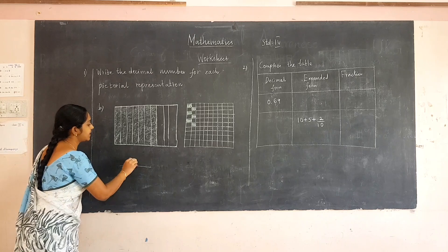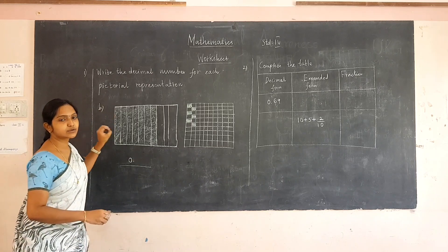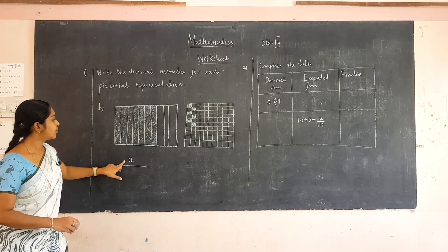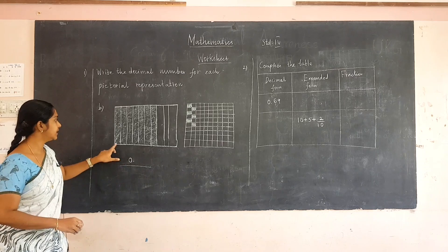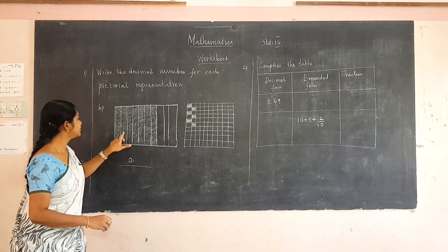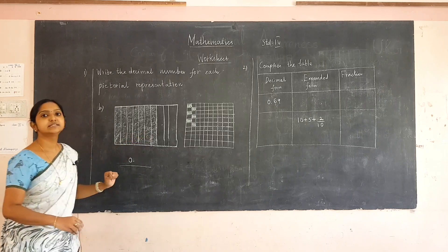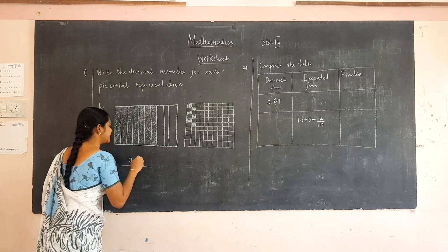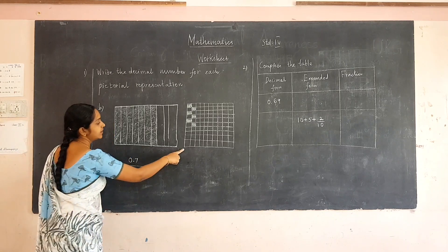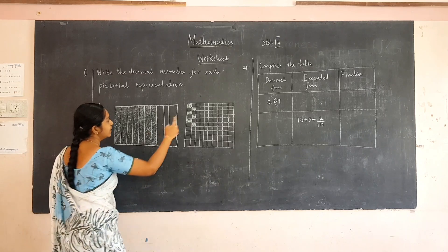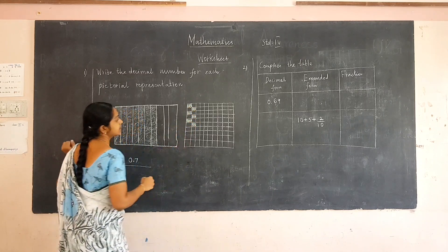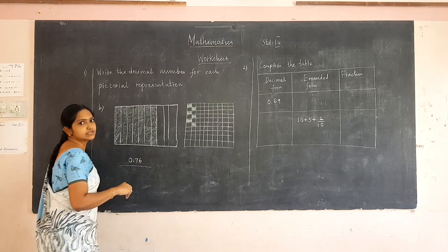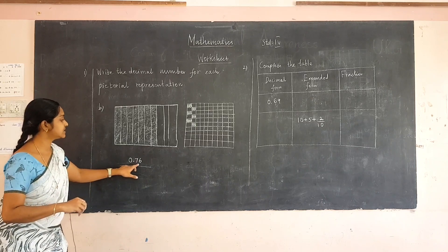If a whole number part is given, a square will be given and the square will be shaded fully. Here no such picture is given, so the whole number part is zero. Next, out of ten, seven parts are shaded, so in the tenths place we will have seven. Here out of hundred, six parts are shaded, so in the hundredths place we put six. So the fraction is zero point seven six.